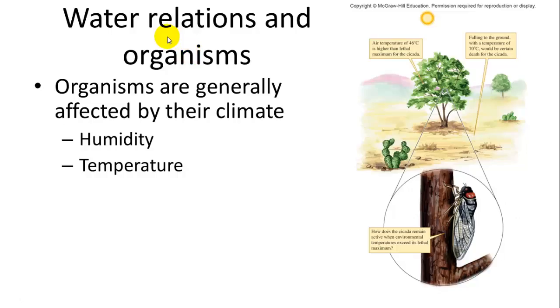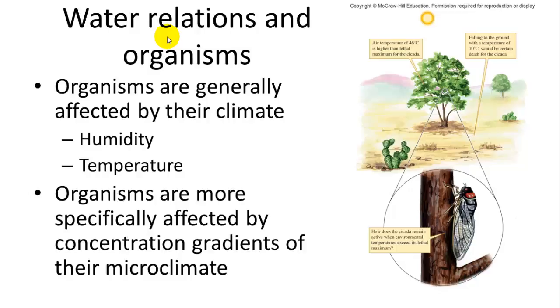So organisms are generally affected by their climate, which a big part of their climate is the amount of moisture in the air, called humidity, and also the temperature, how hot it is, how cold it gets, and so on.